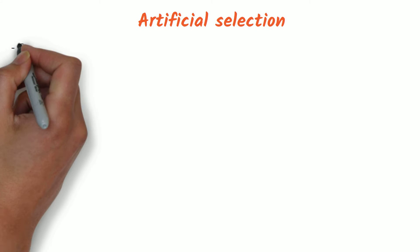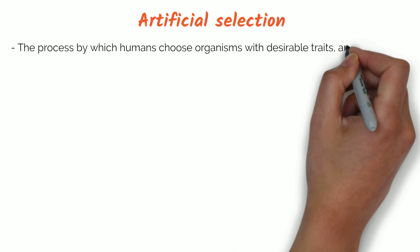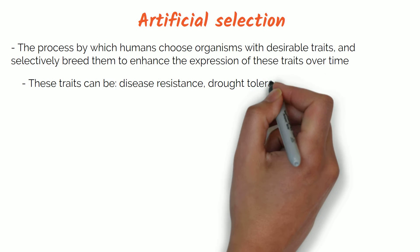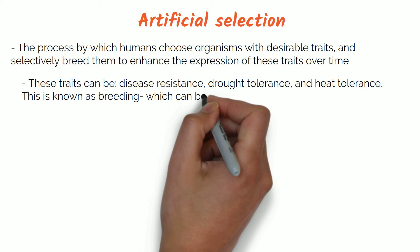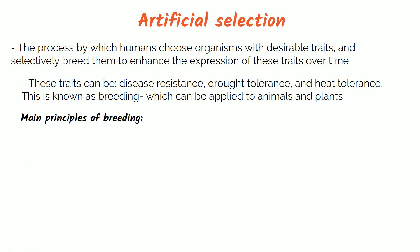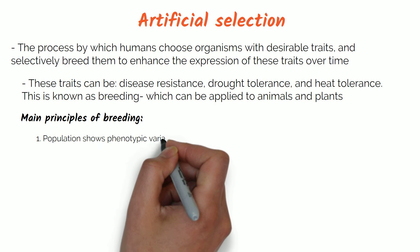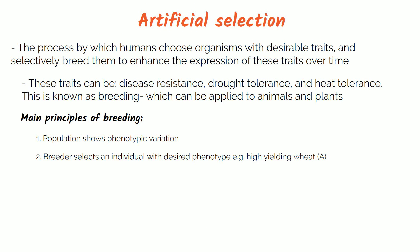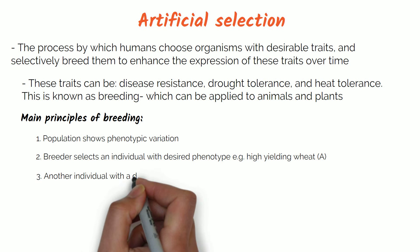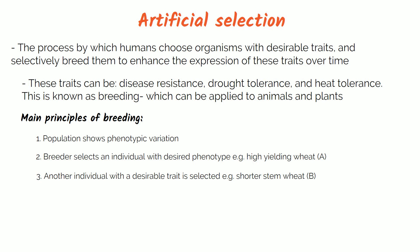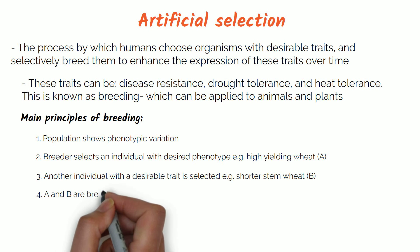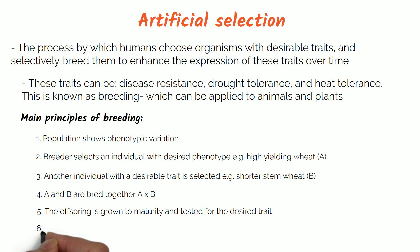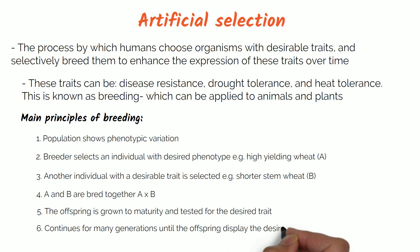Artificial selection is the process by which humans choose organisms with desirable traits and selectively breed them to enhance the expression of those traits over time, such as disease resistance, drought tolerance and heat tolerance. This is also known as selective breeding and can be applied to animals and plants. The main principles are: (1) a population shows phenotypic variation; (2) the breeder selects an individual with the desired phenotype, e.g. high-yielding wheat — parent A; (3) another individual with a desirable trait is selected, e.g. shorter-stem wheat — parent B; (4) A and B are bred together; (5) offspring are grown to maturity and tested for the desired trait; (6) this continues for many generations until offspring display the desired traits or homogeneity.